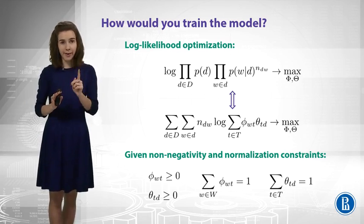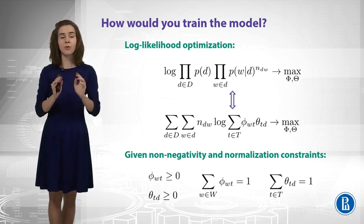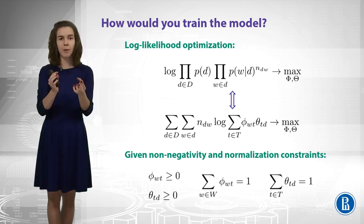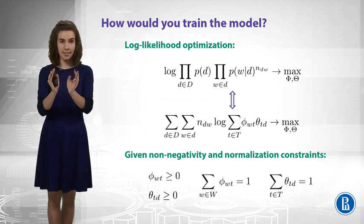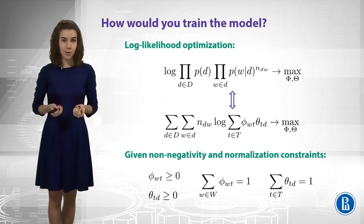What we care about is the probabilities of words in documents. So we substitute them by the sum over topics. This is what our model says. Great, so that's it, and we want to maximize this likelihood.